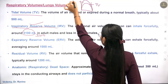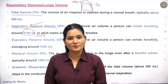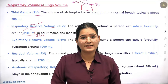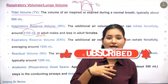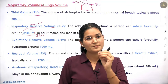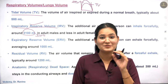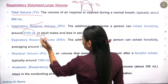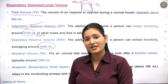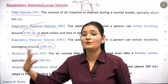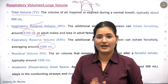Next is expiratory reserve volume. Expiratory reserve volume is the extra air you can forcefully exhale beyond the tidal volume exhalation. In tidal volume you expire around 500 ml, but with expiratory reserve volume you can forcefully expire an additional 1000 ml or more beyond that.